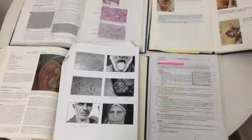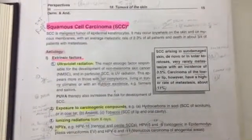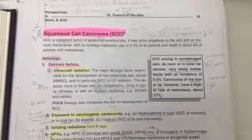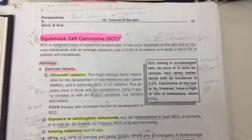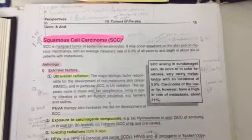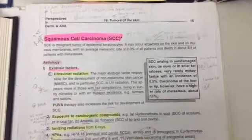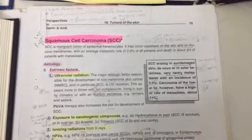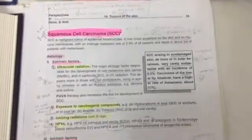Now we will talk about squamous cell carcinoma. Squamous cell carcinoma is a malignant tumor of epidermal keratinocytes. It can occur anywhere in the skin and mucous membranes, with average metastasis of 2-3% of all patients and death in about 3/4 of patients with metastasis. So it is a malignant tumor of epidermal keratinocytes with 2% metastasis, and 3/4 of metastasis patients will die.